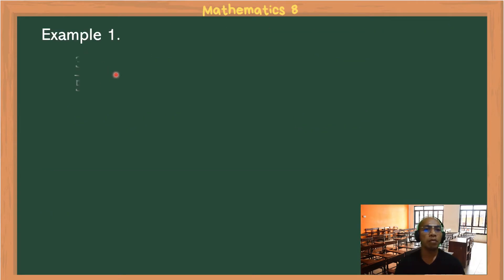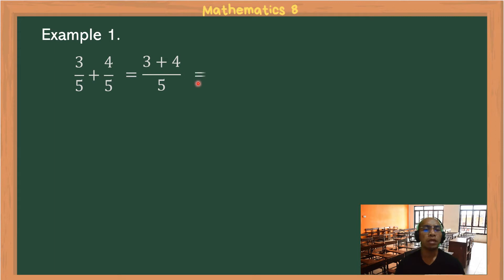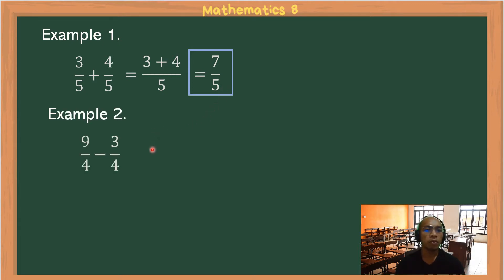Example 1: 3/5 + 4/5. These are similar fractions, so we copy the common denominator 5 and add the numerators: 3 + 4 = 7. The answer is 7/5. Since this fraction is already in lowest terms, this is the final answer.